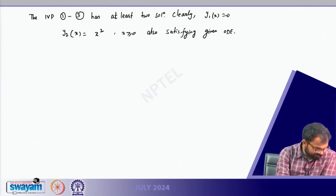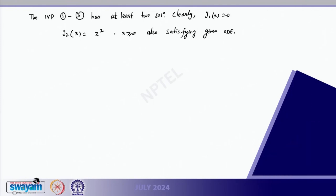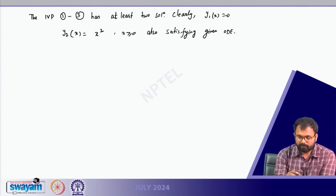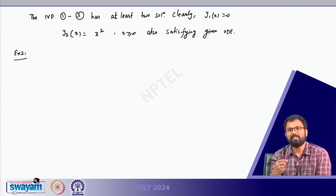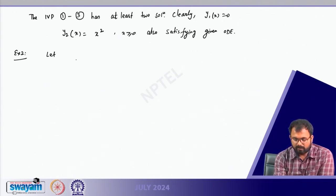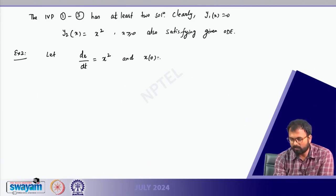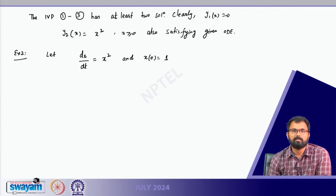Now let us look at one more example where the solution does not exist on the entire real line. Consider Example 2: let dx/dt = x², with initial condition x(0) = 1.